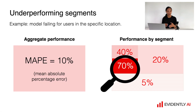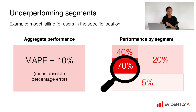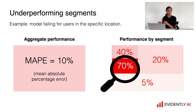Sometimes we might face so-called underperforming segments. If our data is quite varied and we can see different segments of users or objects, we might see that the model works differently on different segments – somewhere it works better, somewhere it works worse. So we need to make sure that we not only assess the average quality of our model but also pay attention to the different segments.